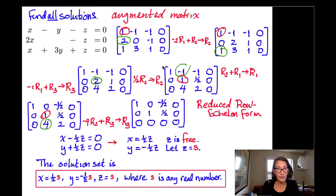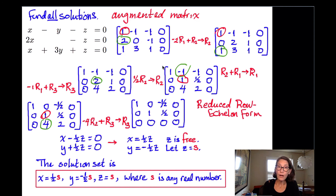So that's an example of a homogeneous system that has the trivial solution, as all homogeneous systems do, but also has infinitely many solutions. We found what all of them have to look like using Gauss-Jordan elimination, getting the augmented matrix into reduced row echelon form. That's it for this one, and I will see you in the next one.